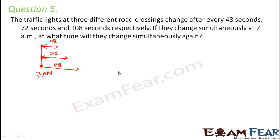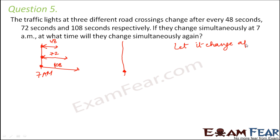We have to find out at what time they will all change together again — what is the next minimum time when all three signals change simultaneously. Let us call this time duration x, so we have to find the value of x.